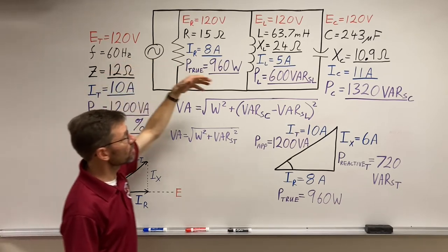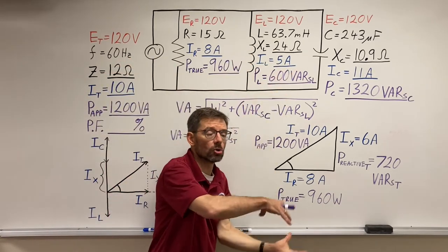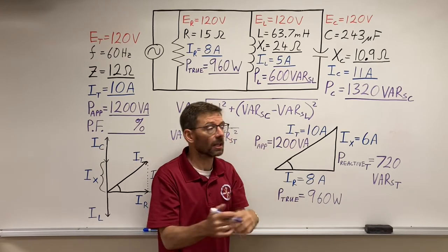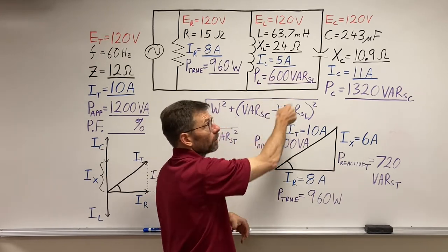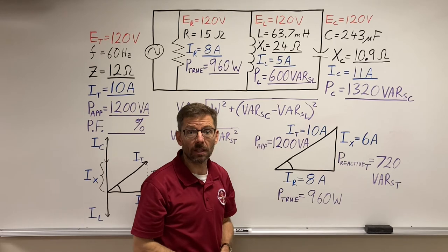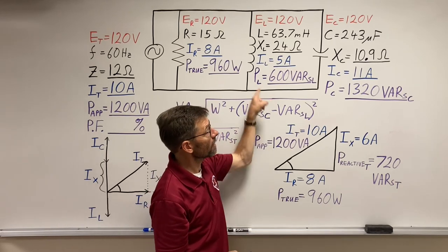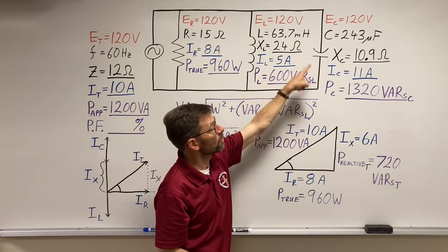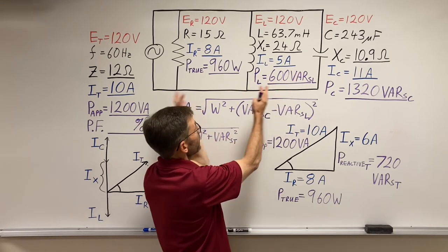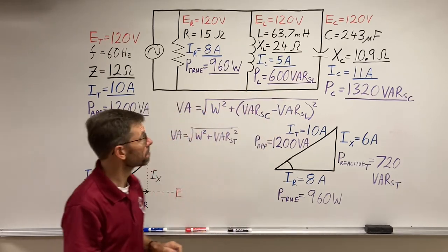Because some of it is going over to take care of these components just doing the storing, releasing, storing, releasing, and kind of trading back and forward with each other as we talked about with the current. That's why the current, that 5 amps, was trading back and forward, and the rest is storing and releasing to the circuit.